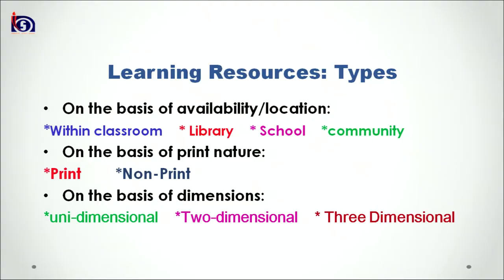What different kinds of learning resources can be used in the social science classroom? On the basis of availability and location, we can categorize them into four categories: resources available within the classroom such as textbooks and blackboard; resources in the library such as reference books, maps and charts; resources situated within the school such as trees or a water tap which can exemplify content; and resources available within the community, such as a museum which can be used to teach history.